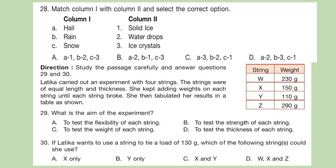Now study the passage carefully and answer questions 29 and 30. Latika carried out an experiment with 4 strings. The strings were of equal length and thickness. She kept adding weights on each string until each string broke, then tabulated her results in a table. Question 29: What is the aim of the experiment? Question 30: If Latika wants to use a string to tie a load of 130 grams, which of the following strings could she use?